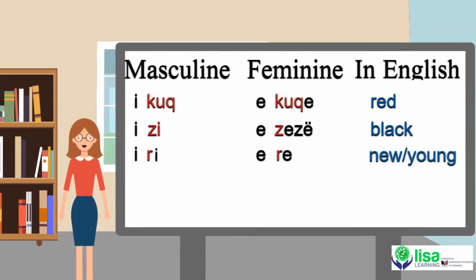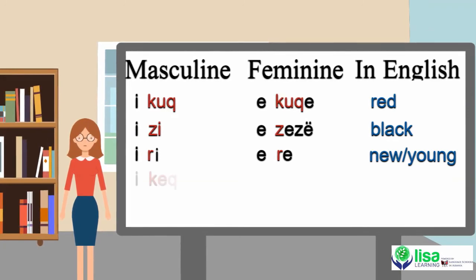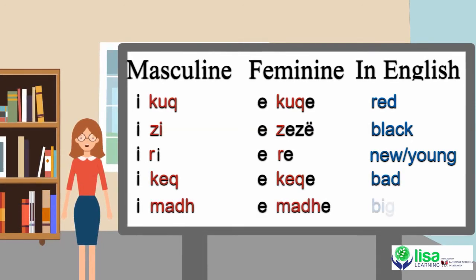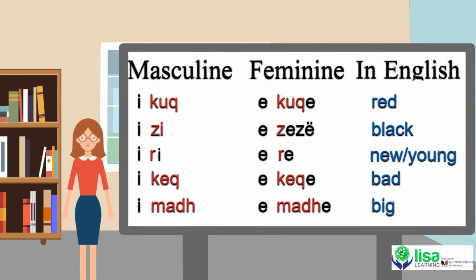More examples of adjectives with different masculine/feminine forms: masculine i ri, feminine e re — in English, new or young. Masculine i keq, feminine e keqe — in English, bad. Masculine i madh, feminine e madhe — in English, big.